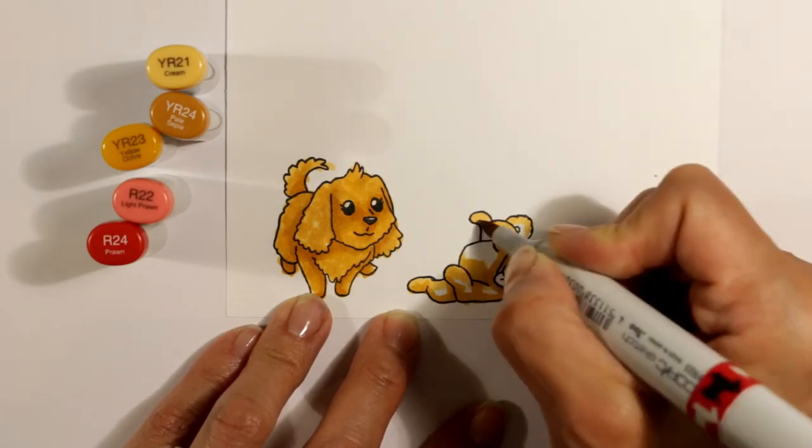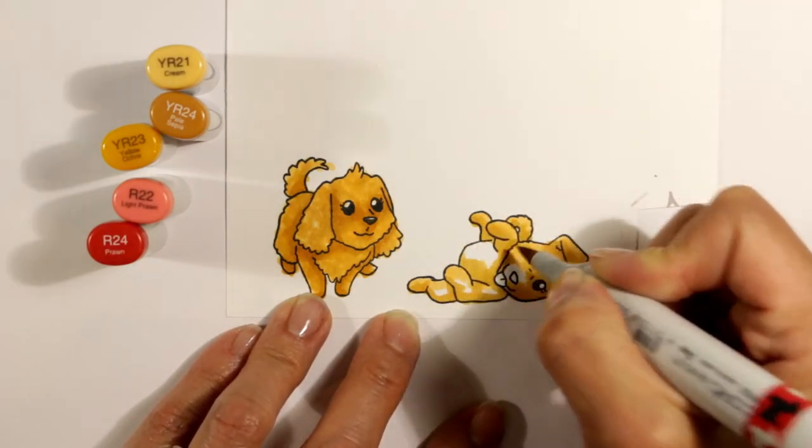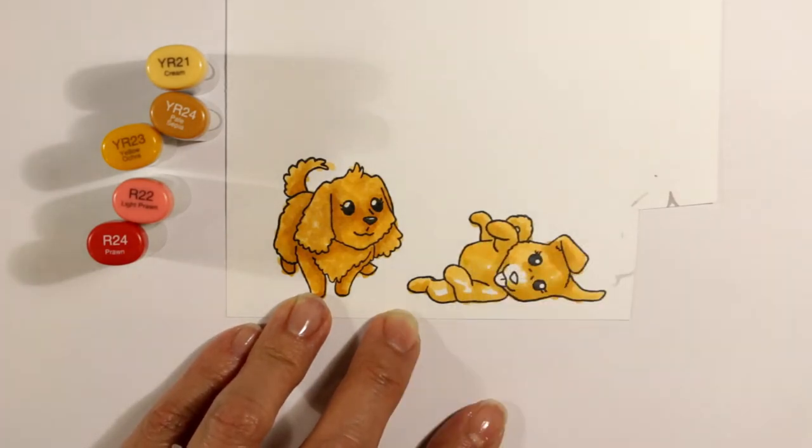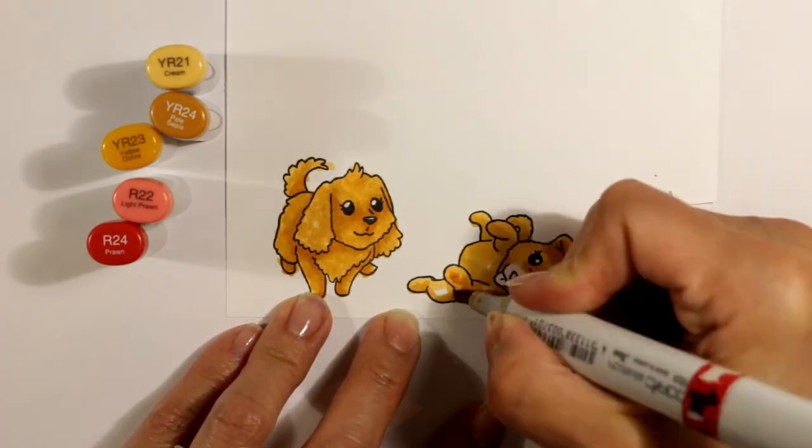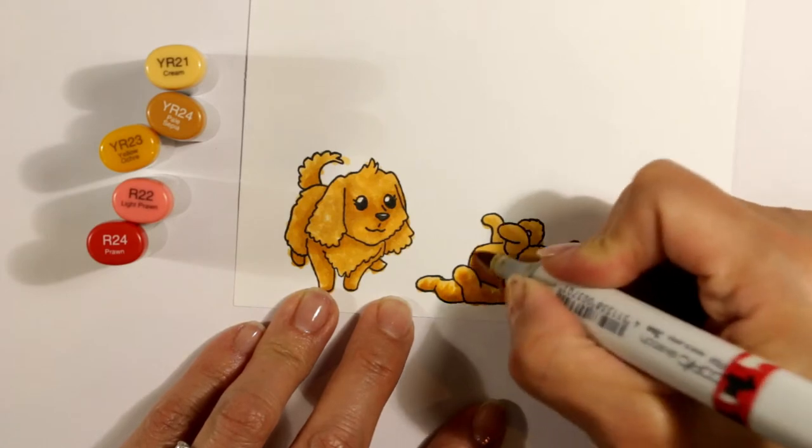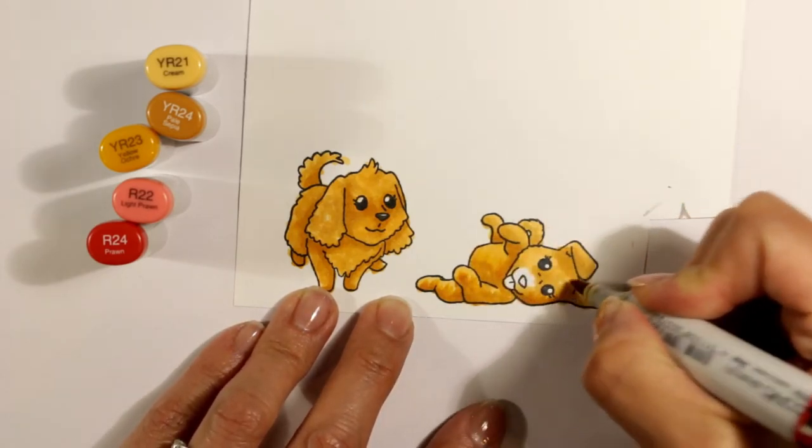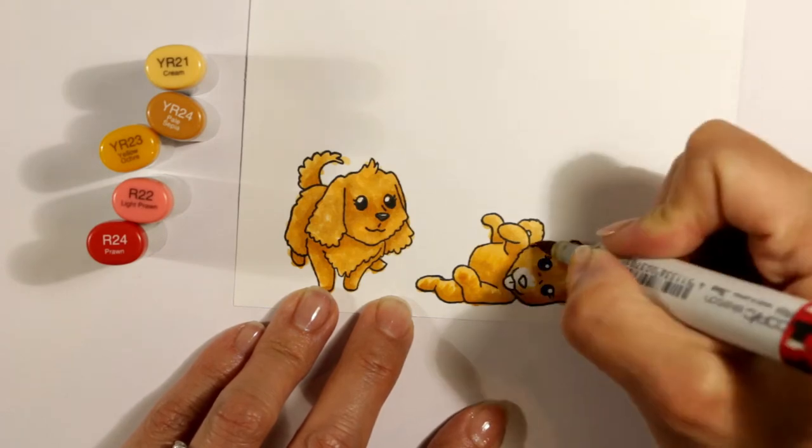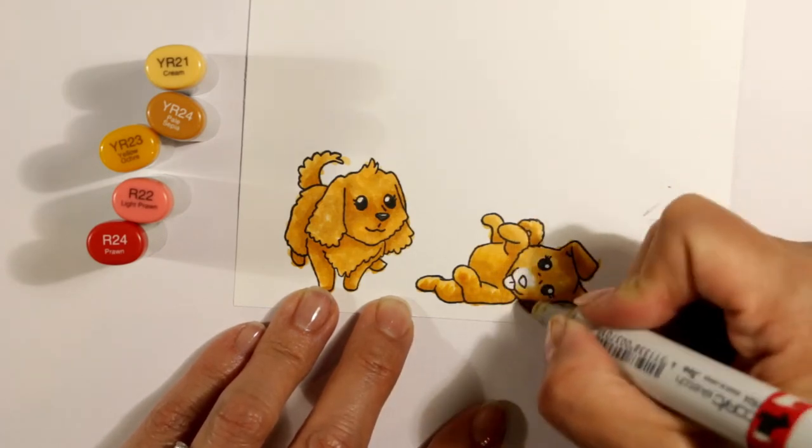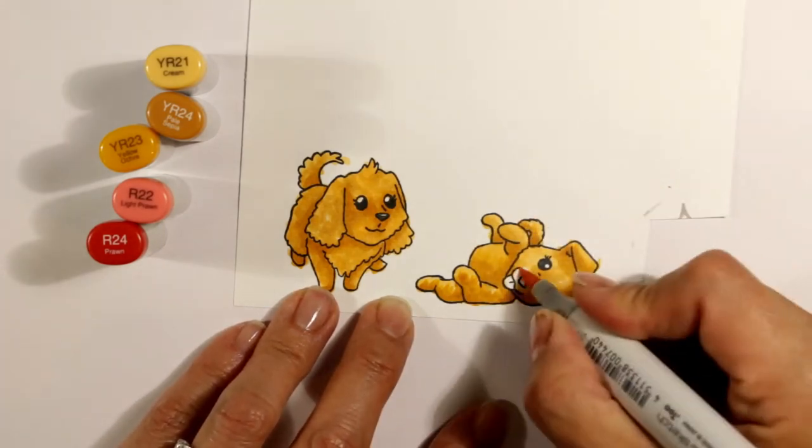Where the chin would cast a shadow, the lower part of the belly, the under parts of each paw, those are all getting the darker shades. Again, I'm using these exact same colors because this is supposed to be two images of the same dog. Even though the second dog is less curly, I figured lying down it wouldn't look as curly as standing up.